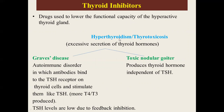The hyperactive thyroid states are referred to as hyperthyroidism or thyrotoxicosis, where there is excessive secretion of thyroid hormones. It is of two types: Graves' disease and toxic nodular goiter. In Graves' disease, it is an autoimmune disorder in which antibodies bind to the TSH receptor on thyroid cells and stimulate the thyroid gland just like TSH, producing more T4 and T3. TSH levels will be low as a result of feedback inhibition.